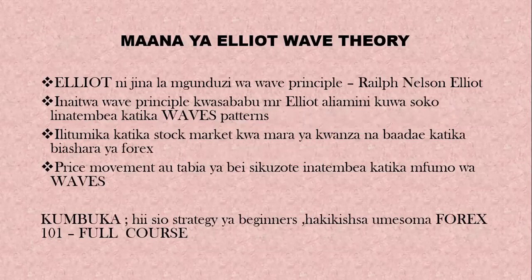Number two tutaanza na maana ya Elliot Wave Theory. Kwanza, neno 'Elliot' ni jina la mgunduzi wa hii strategy, ambayo mbele ilijulikana kama Wave Principle, na jamaa anajulikana kama Ralph Nelson Elliott. Iliitwa Wave Principle kwa sababu Mr. Elliott aliamini kwamba always soko linatembea katika Wave Patterns — halimove kama kamba, lakini linakuwa linamove katika Wave Patterns kwa njia maalumu. Kwa hiyo tunajua inatakiwa kujua jinsi hizi waves zinavyojipanga.